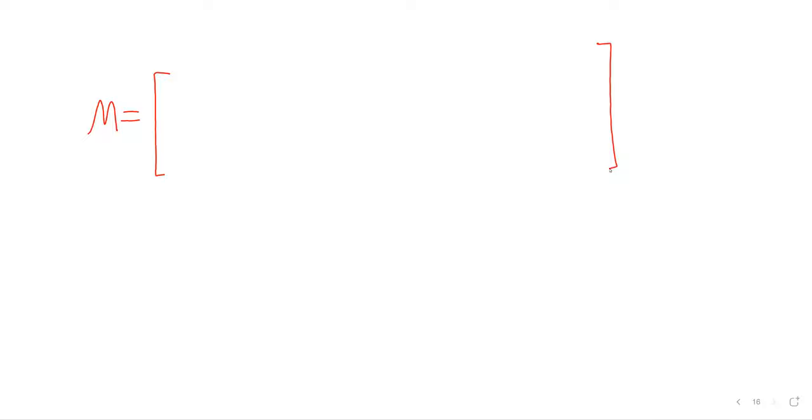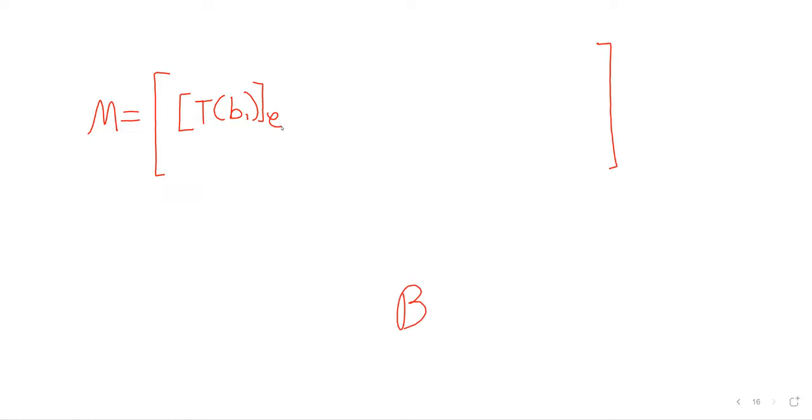and here's where we start to suffer for using these square brackets to represent like five different things. M is a matrix, so its first column is the coordinate vector of B sub 1 with respect to C. And just so we're very clear, I mean,